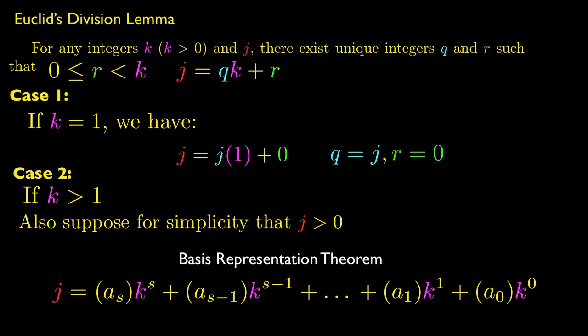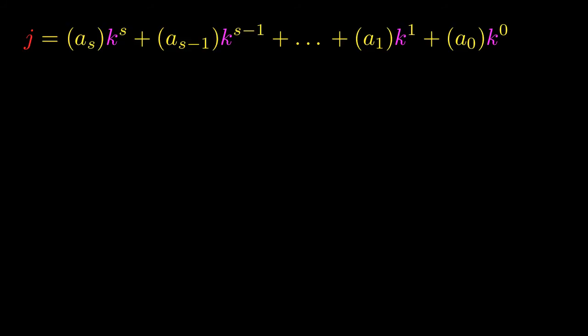So in this case, we have j represented by a big algebraic expression that I'll talk more about on the next slide. So here is the algebraic expression that we're talking about. And it kind of looks messy, so let's break down what this is.